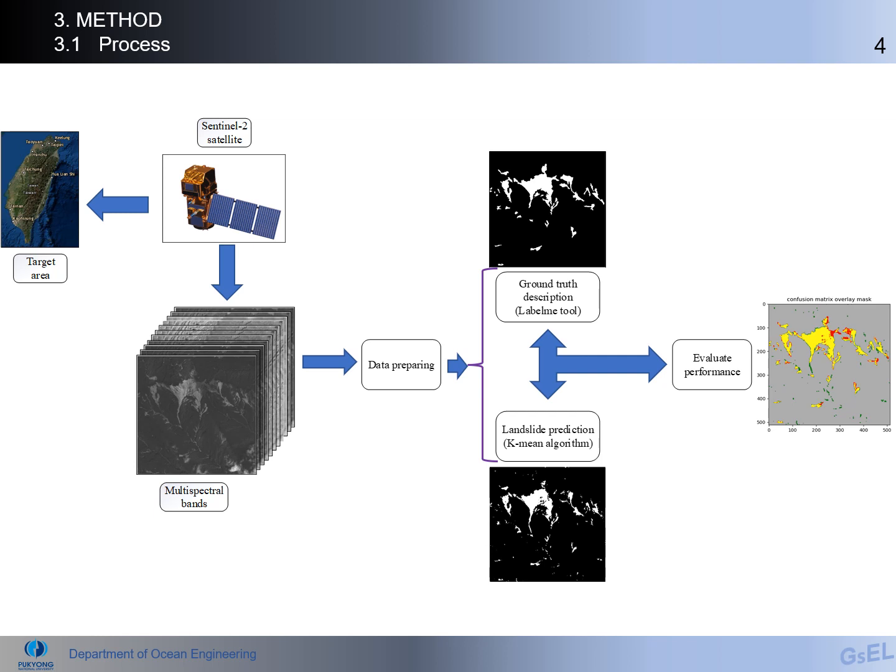We then evaluate the accuracy of the machine learning model. In more detail, from the Sentinel-2 satellite we have three spectral band datasets. After that, we prepare the dataset with QGIS description using link tools, and apply the K-means algorithm to detect landslide. After that, we combine results to evaluate the performance of the machine learning model.